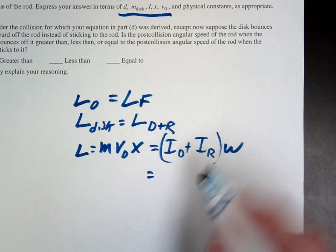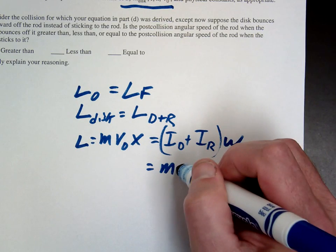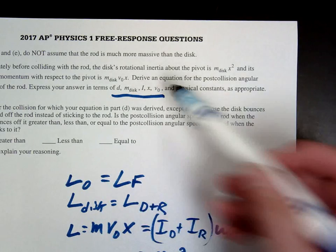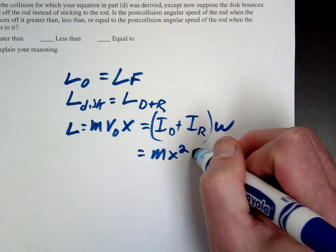The I for the disc is given to you as Mx squared. Mx squared. And the I for the rod, they just want you to express that in terms of I. So that would be plus I.